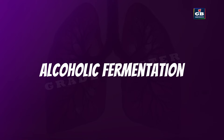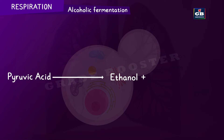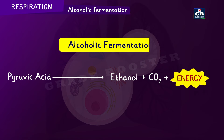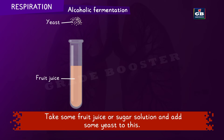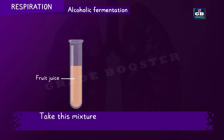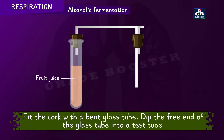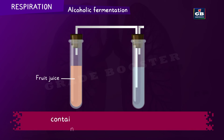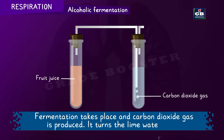Alcoholic fermentation. In organisms like yeast, during anaerobic respiration, pyruvic acid molecules are converted into ethanol and carbon dioxide. This process is called alcoholic fermentation. We can observe alcoholic fermentation with the help of an activity: take some fruit juice or sugar solution, add some yeast to it, place this mixture in a test tube fitted with a one-hole cork, and fit the cork with a bent glass tube. Dip the free end of the glass tube into a test tube containing freshly prepared lime water. Fermentation takes place and the carbon dioxide gas produced turns the lime water milky.